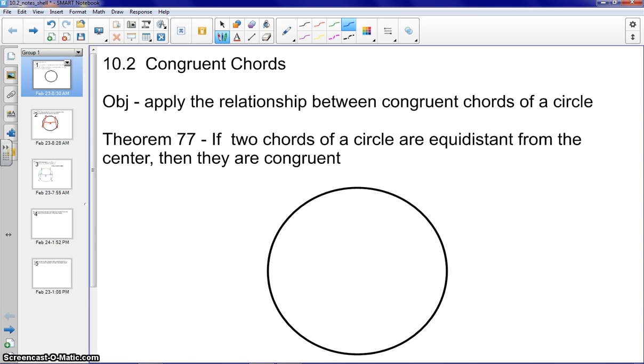We're going to piggyback off of what we did in Section 10-1, which is regarding the diameter. If it's perpendicular to a chord, then it bisects the chord, and vice versa. Well, in this theorem today, we're going to talk about if two chords of a circle are equal distance from the center, then they are congruent.